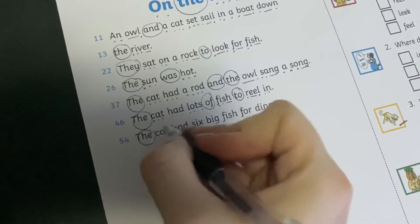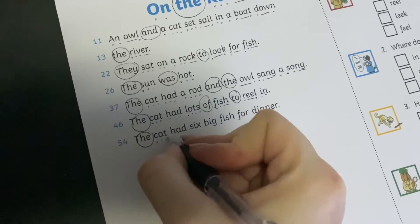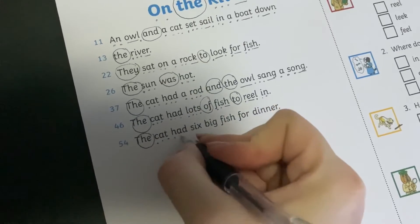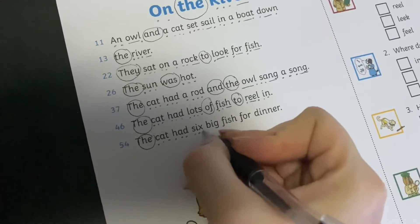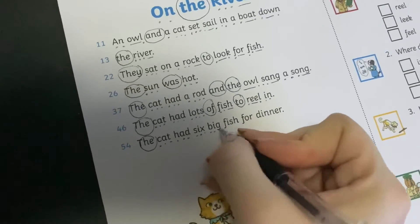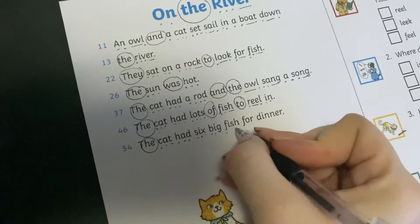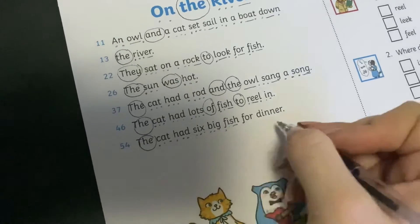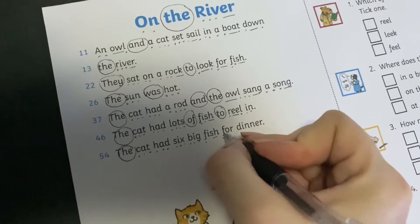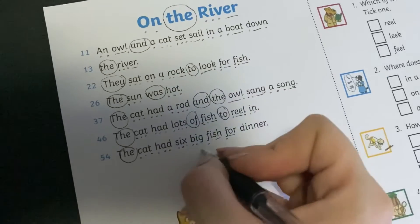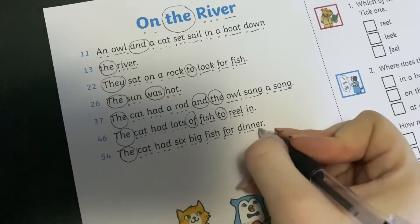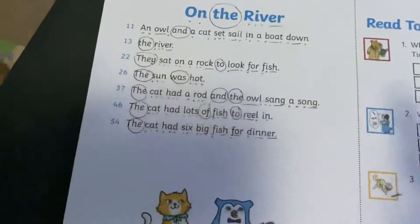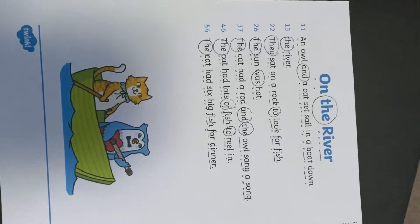Tricky word: 'the.' C-a-t — 'cat.' H-a-d — 'had.' The cat had — s-i-x — 'six.' B-i-g — 'big.' F-i-sh — 'fish.' F-o-r — 'four' — wait, 'for.' The cat had six big fish. D-i-n-n-e-r — 'dinner.' The cat had six big fish for dinner. What a greedy cat!